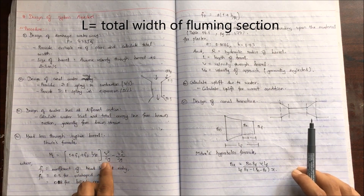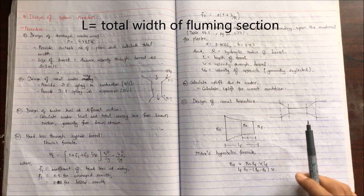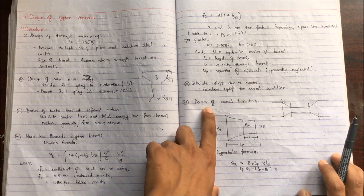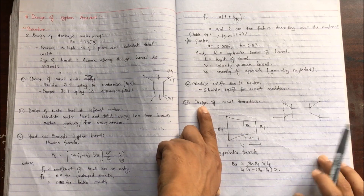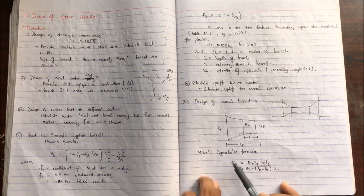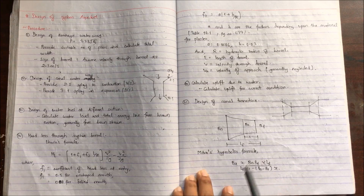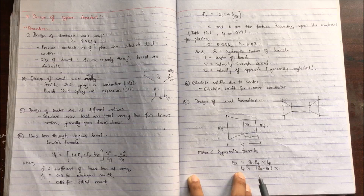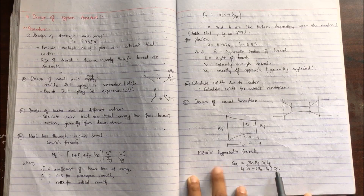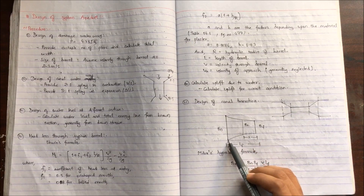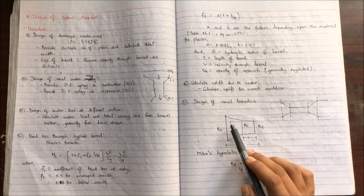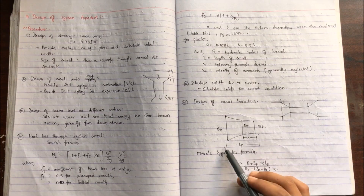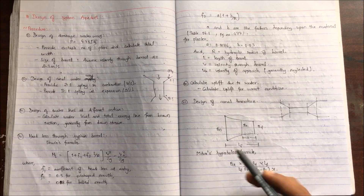The fifth step is to calculate the uplift due to water, and the sixth step is to design the canal transition using Mitra's hyperbolic formula: Bx = (Bn × Bf × Lf) / (Lf × Bn − Bx × x + Bn × x), where Bn is the normal bed width, Bf is the fluming section width, Bx is the width at distance x, and Lf is the length of transition.